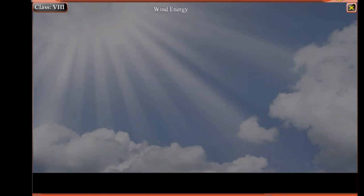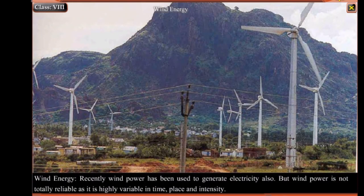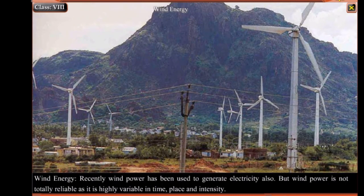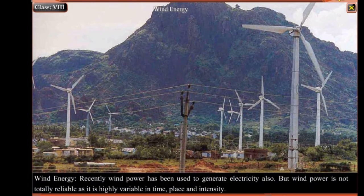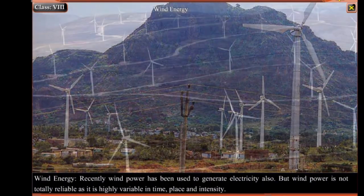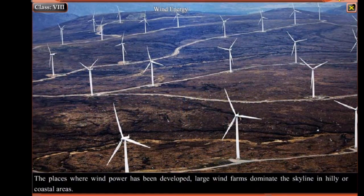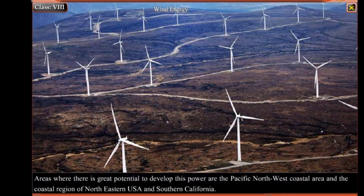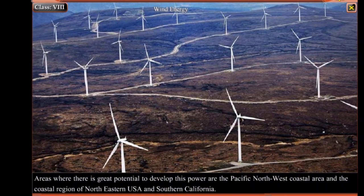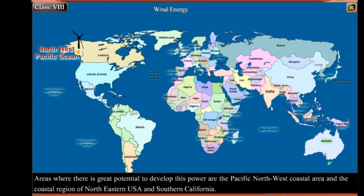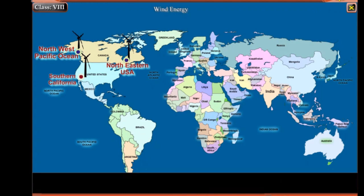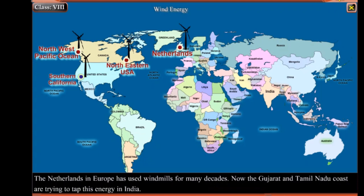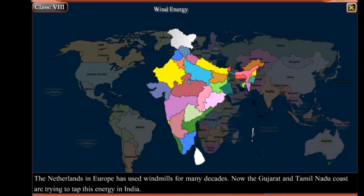Wind Energy: Wind power has been used to generate electricity. However, wind power is not totally reliable as it is highly variable in time, place and intensity. Where wind power has been developed, large wind farms dominate the skyline in hilly or coastal areas. Areas with great potential include the Pacific Northwest coastal area, the coastal region of the northeastern USA and southern California. The Netherlands in Europe has used windmills for many decades. The Gujarat and Tamil Nadu coasts are trying to tap this energy in India.